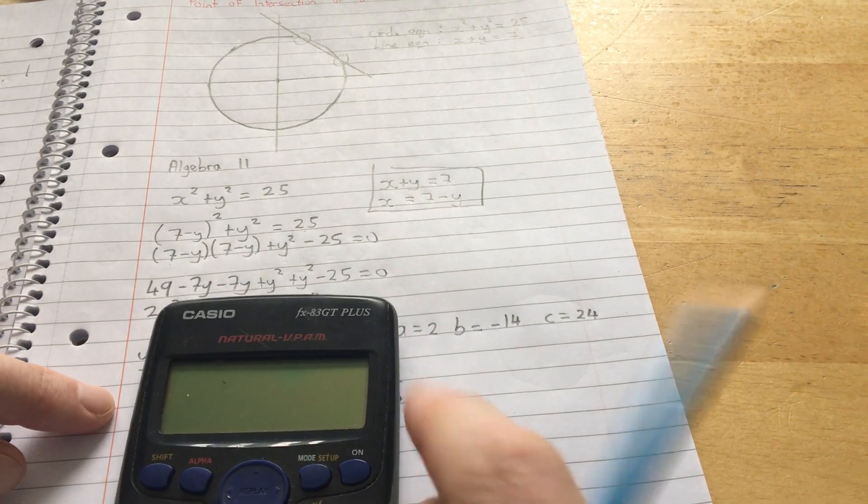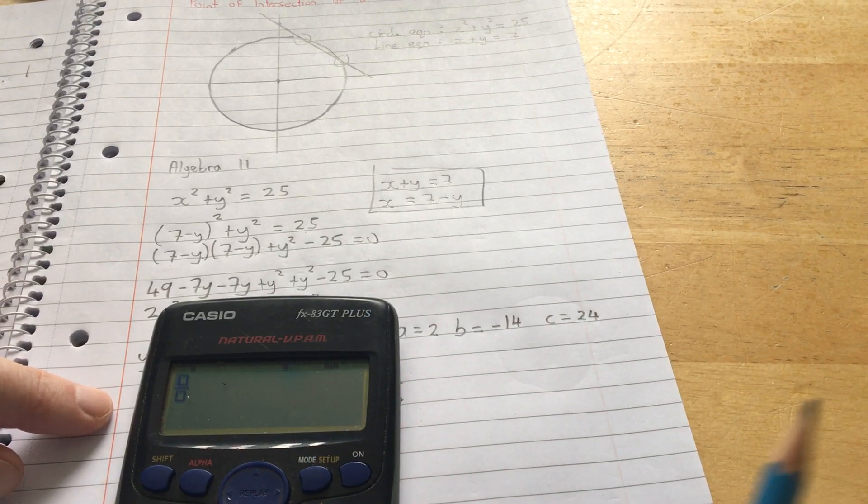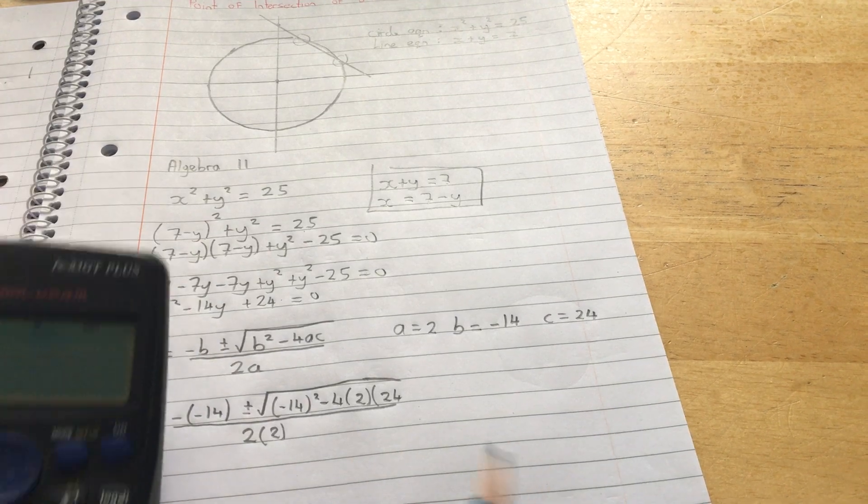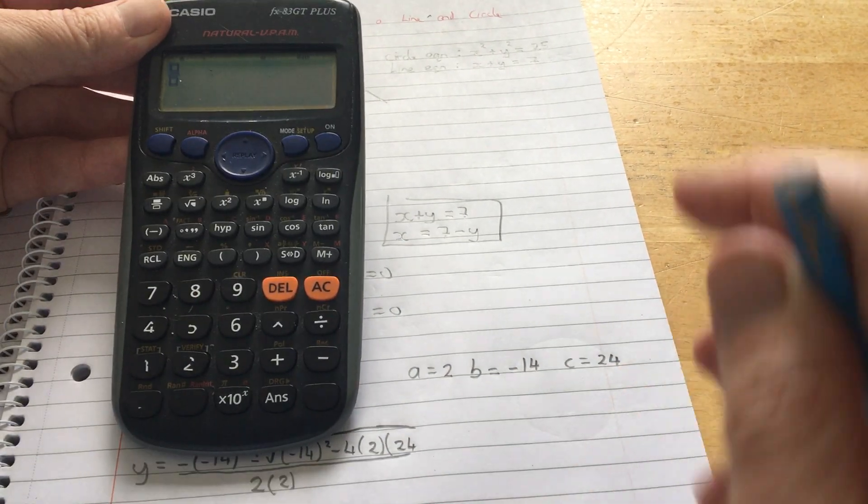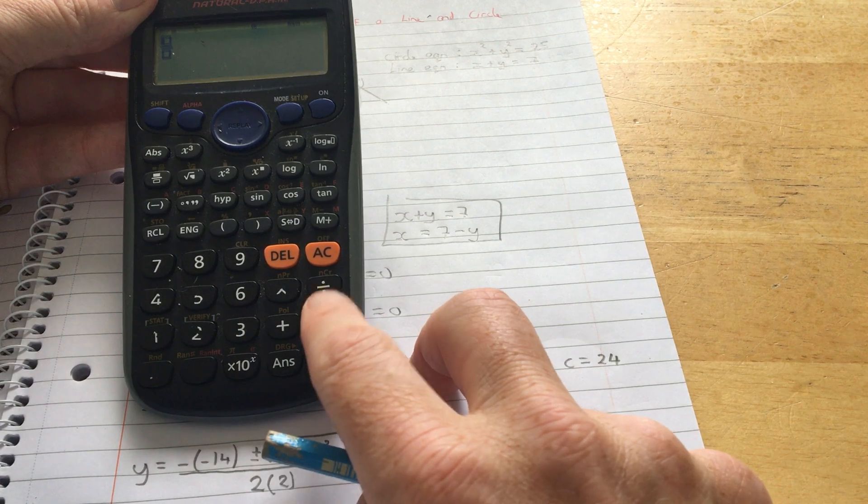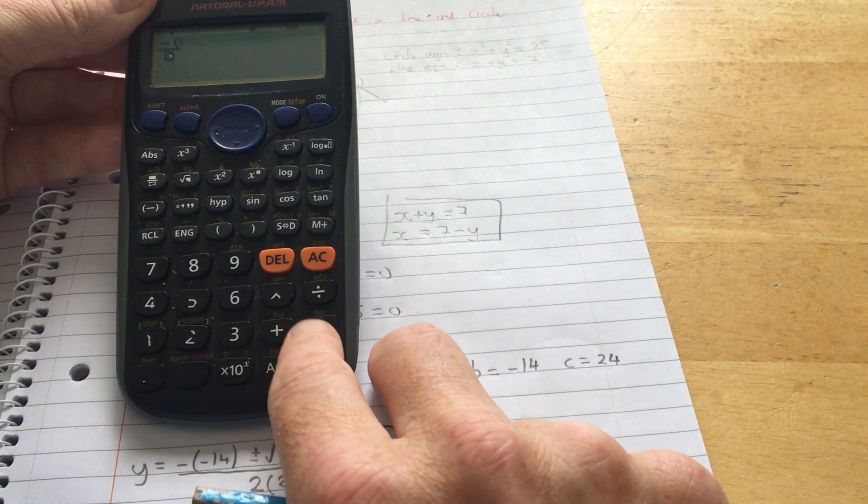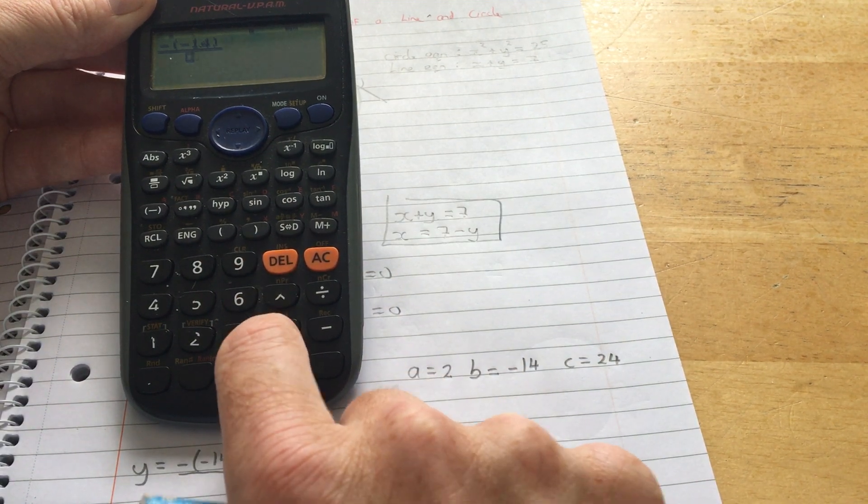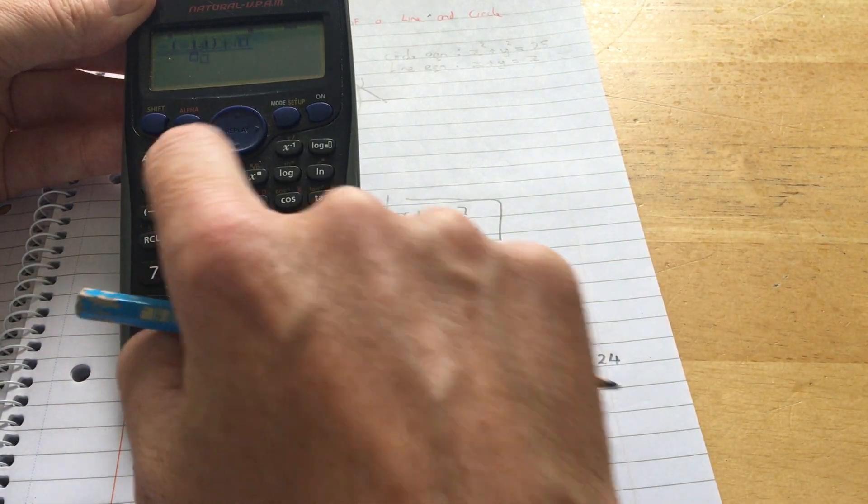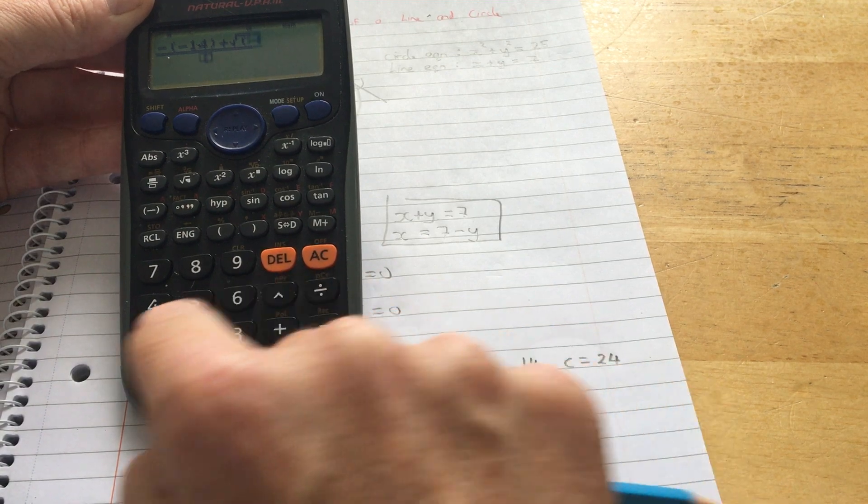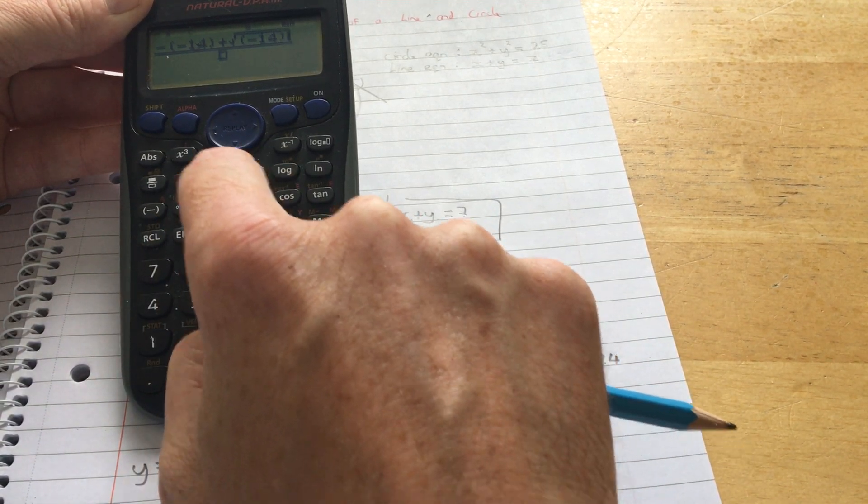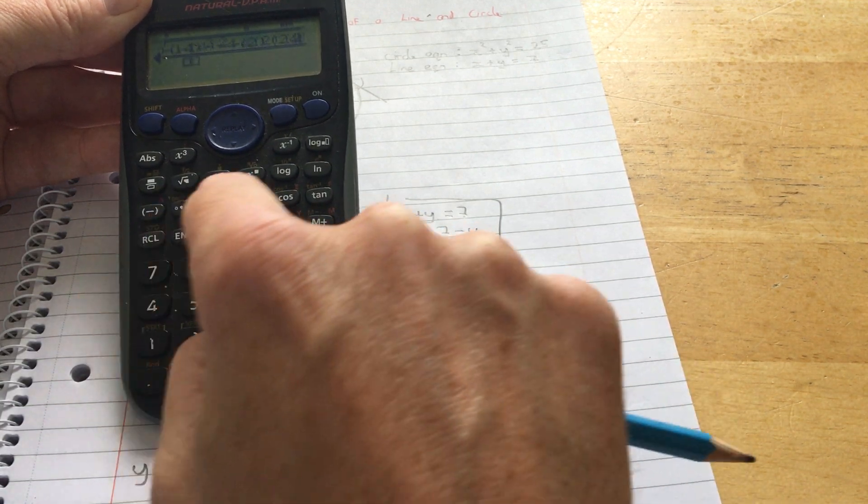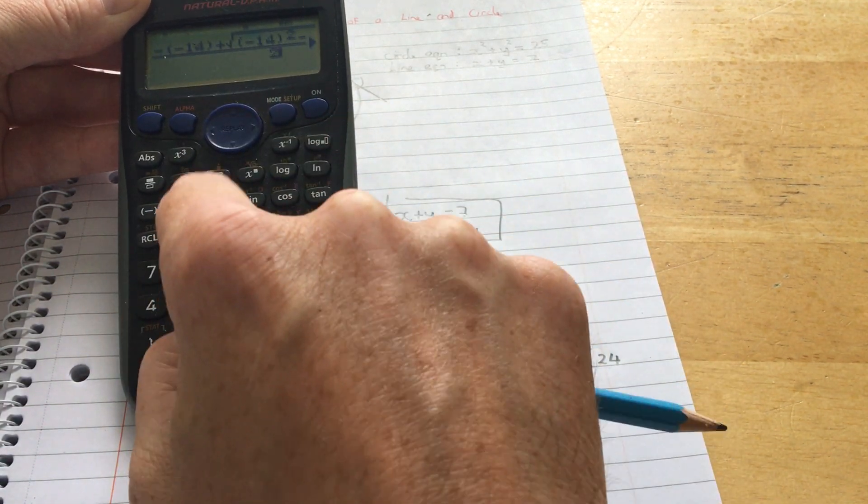And this is when you put it into the calculator. You might remember you can type the fraction button. You're just going to type exactly this into the calculator. Minus bracket, minus 14, bracket. Put in the plus first time, and then put in the minus. So the square root of minus 14 squared, so bracket squared, minus 4 times a times c. And c is 24. Close the brackets. 2 times 2.